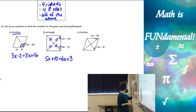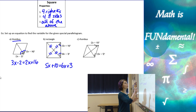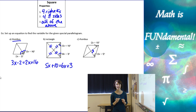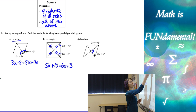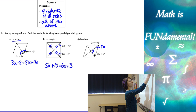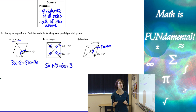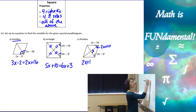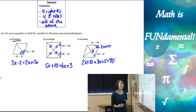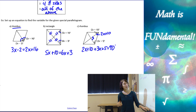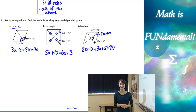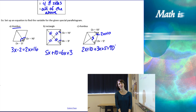The last example is another rhombus combining two properties. Diagonals are perpendicular, giving us 90-degree angles. The diagonals bisect opposite angles, so the angle labeled (2x + 10) is bisected — both halves equal (2x + 10). This creates a right triangle where (2x + 10) and (3x + 5) must add up to 90 degrees so the triangle totals 180 degrees. That concludes our lesson — thank you for watching, and remember, math is fundamental!